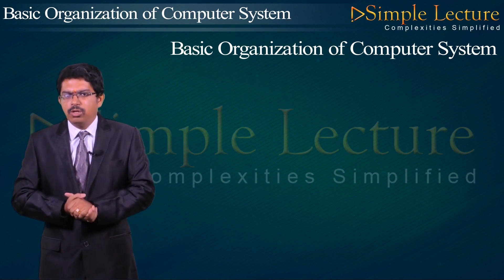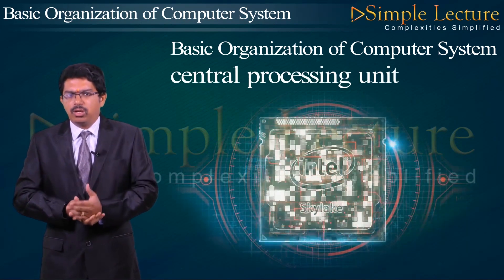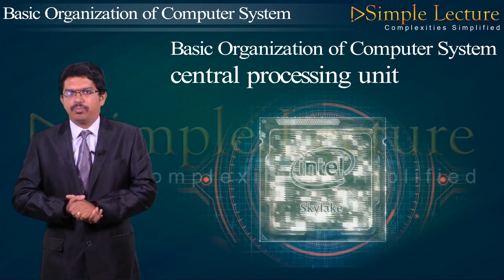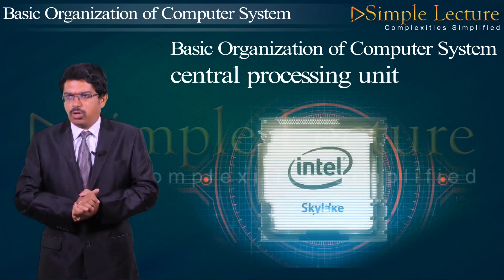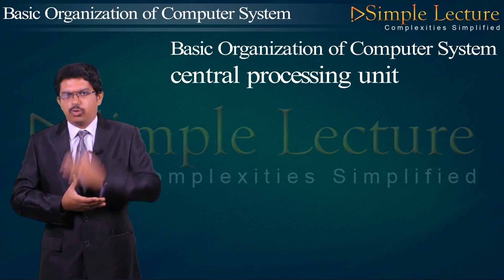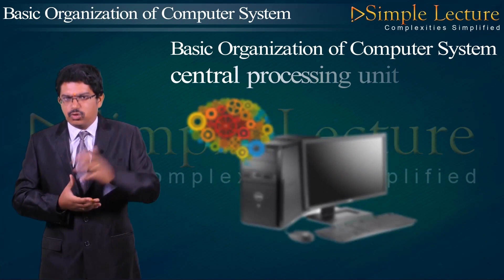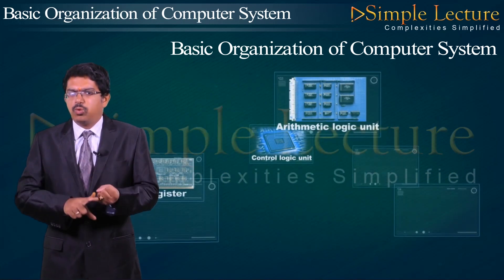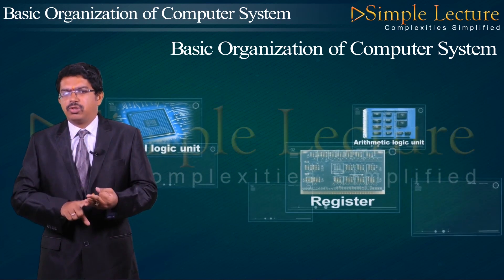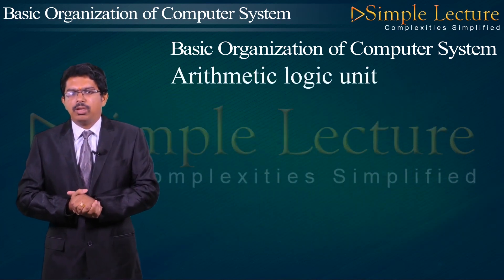Now we are going to discuss about the central processing unit. It controls, coordinates, and supervises the operation of a computer. This CPU, also called the brain of a computer, consists of the arithmetic logic unit, control unit, and registers.